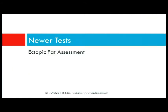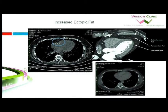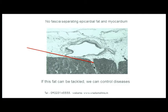Ectopic fat assessment: ectopic fat is not visceral fat. Ectopic fat lies in the liver, pancreas, kidney, skeletal muscle, heart, and peritoneum. A simple echocardiographic assessment of pericardial and epicardial fat can be done — epicardial fat more than 7 millimeters indicates ectopic fat is present. A histological section shows that the epicardium and myocardium have no fascia separating them, so fat lodged in the epicardium traverses along blood vessels into the myocardium, exerting autocrine and paracrine effects that disturb endothelial and vascular function.